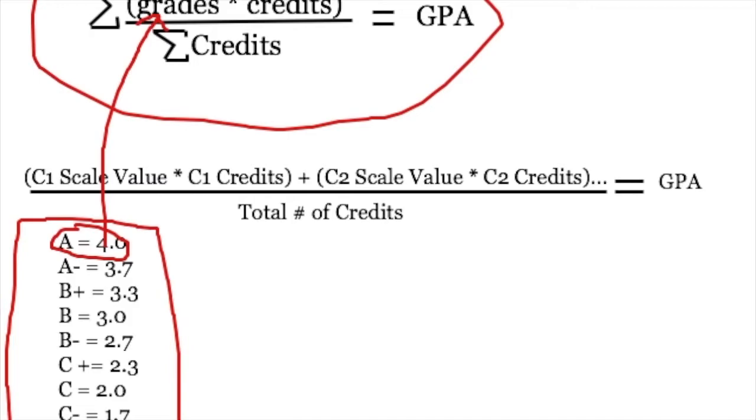And then the formula, this symbol here, this represents sum. If you're not a math person, it just means sum. It just means basically add everything up to the numerator. And even if you are a math person, you might not have recognized that that's the symbol for sum, just because my drawing skills are pretty bad. But that's what that means. And so that's how you get your GPA using this formula.